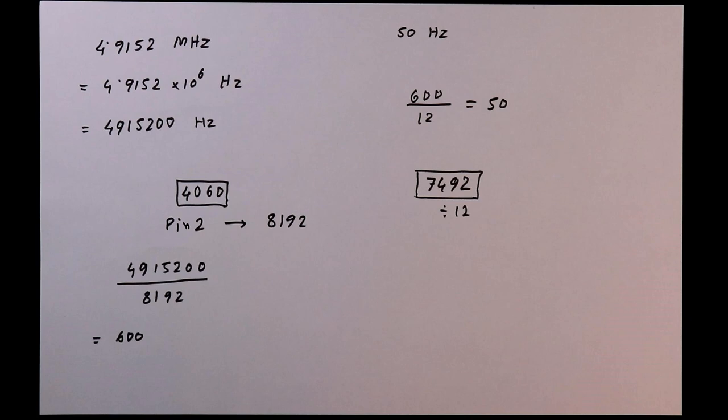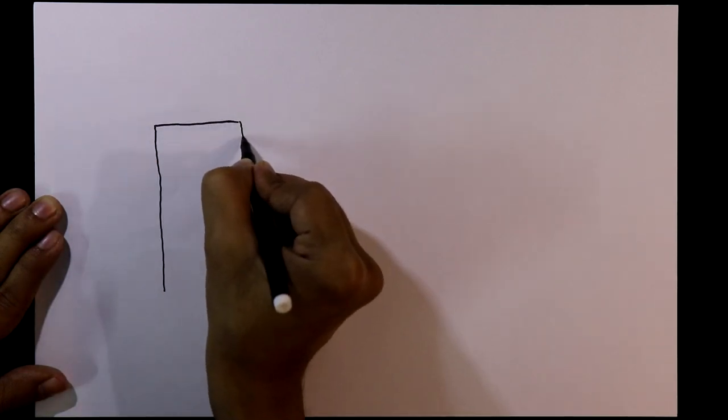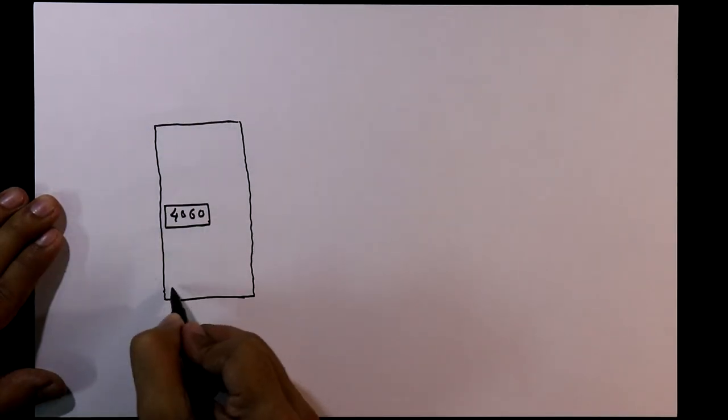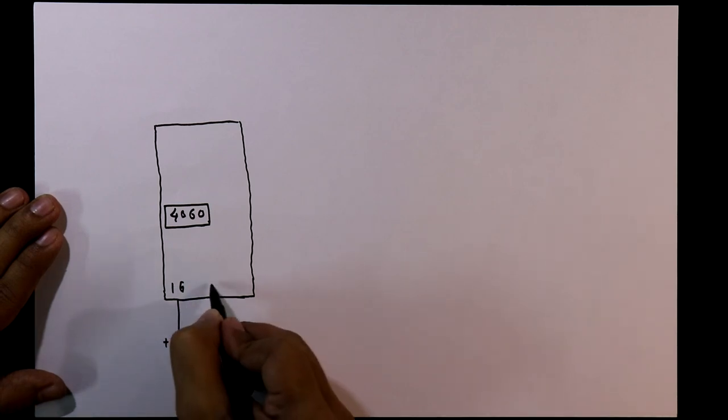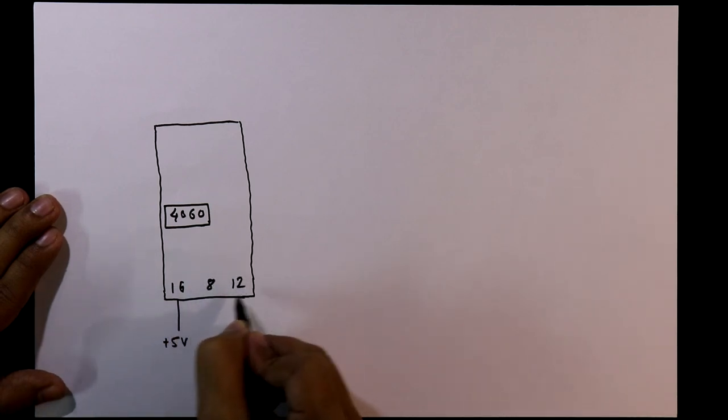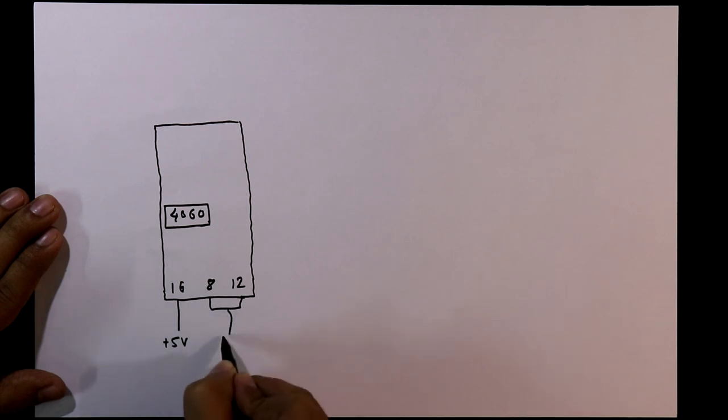Now we will see the circuit diagram. We have IC 4060. Pin number 16 should be connected to plus 5V and pin number 8 and 12, these two should go to ground.